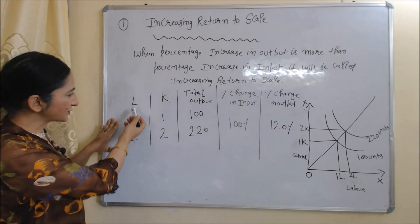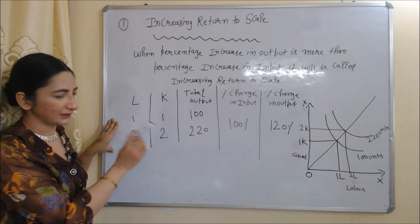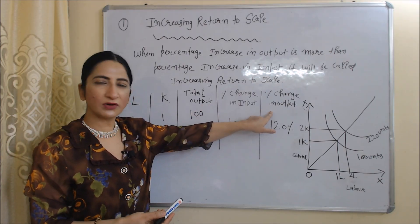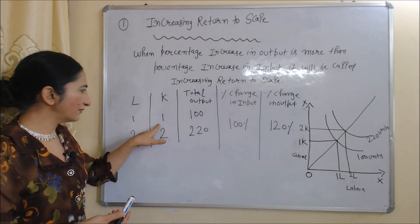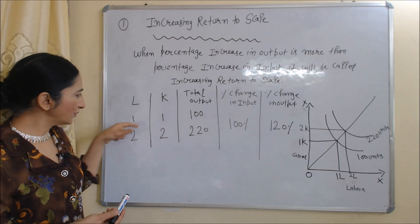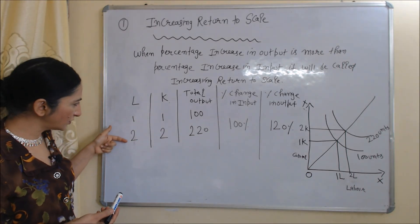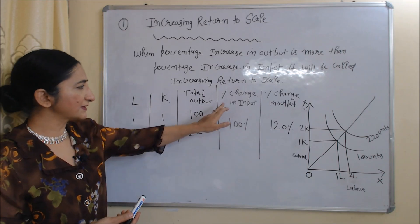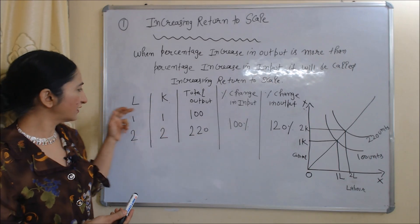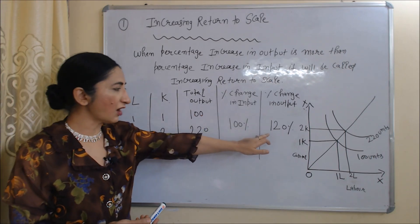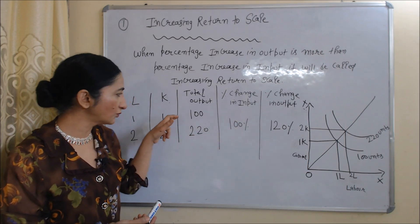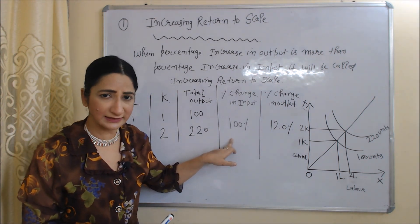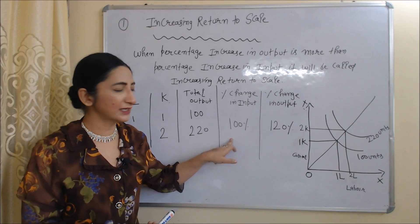Here you can see our inputs are labor and capital. The first column has labor, the second column has capital, the third column has total output, the fourth column has percentage change in input, and the last column has percentage change in output. One labor and one capital gives 100 units of output. When we increase labor and capital from one to two, output increases from 100 to 220 units. Percentage change in input is 100%, but percentage change in output is 120%. Since percentage change in output is more than percentage change in input, this is called increasing returns to scale.